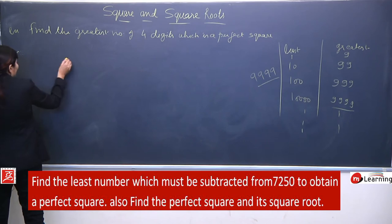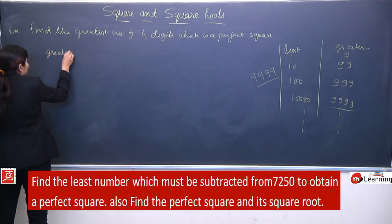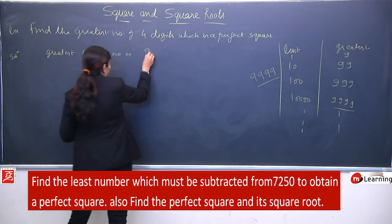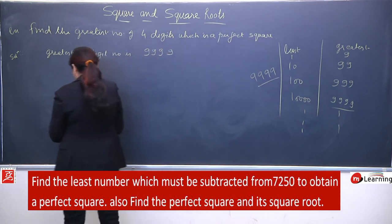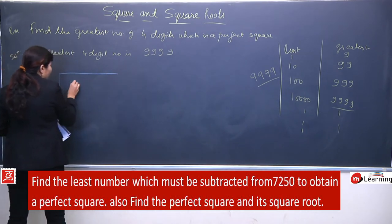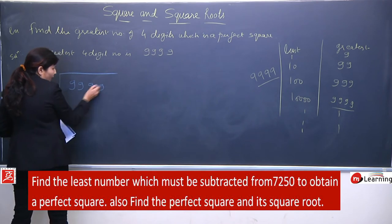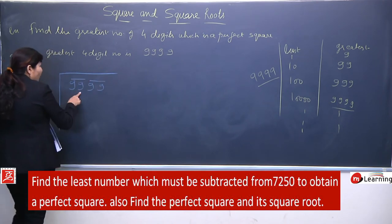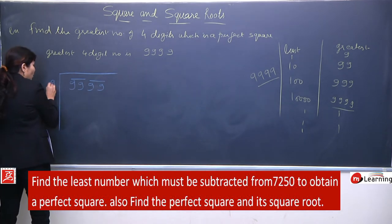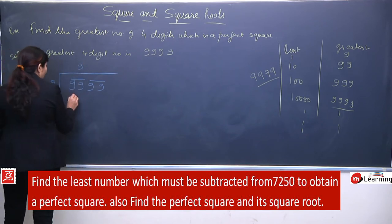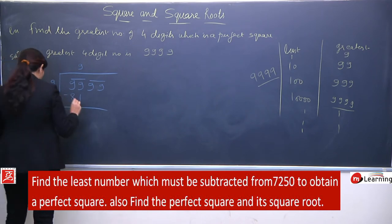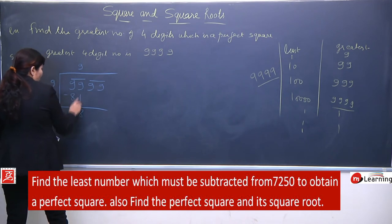Now solve karenge. The greatest 4-digit number is 9999. Long division method mein pairing banayenge right side se: 99 | 99. Pehle 99 ke liye aisa number choose karenge jo yahan bhi likhenge. Obviously 9 lenge — 9 × 9 = 81. Wahi 9 add kar diya. 81 subtract karne pe 18 milega. Poora pair 99 copy karenge.